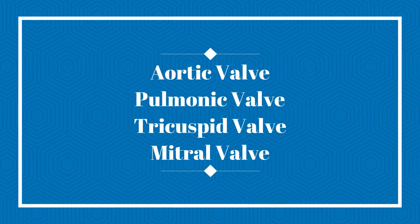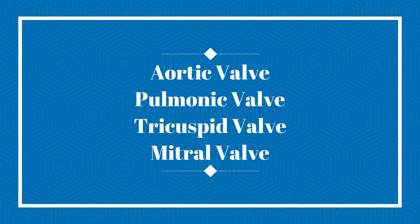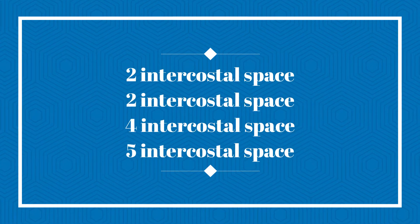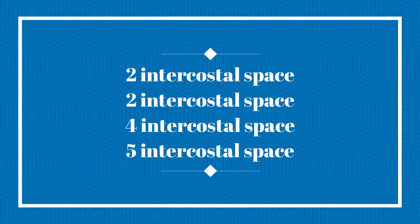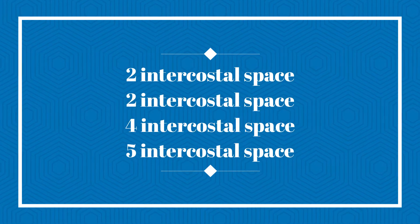Apartment M2245 stands for: A — aortic valve, P — pulmonic valve, T — tricuspid valve, M — mitral valve, and the numbers 2, 2, 4, 5 stand for the second intercostal space, second intercostal space, fourth intercostal space, and fifth intercostal space.